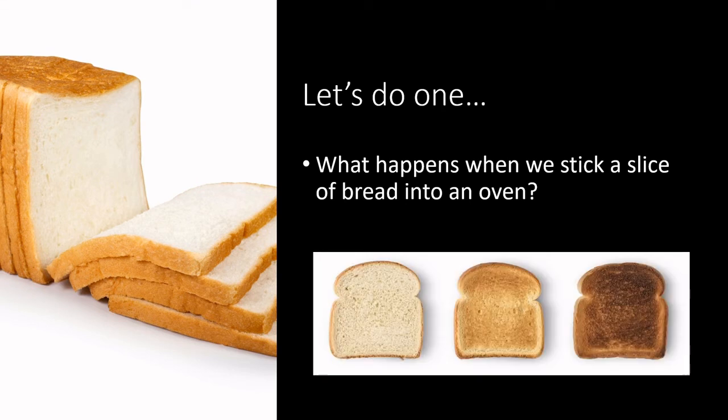That bread is going to go from being a pale white color to being a dark golden color with Maillard browning and caramelization occurring with the carbohydrates. And potentially, if there's sugar in that formulation, some caramelization. Carbohydrates and proteins forming Maillard products.